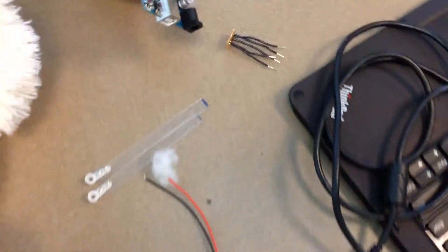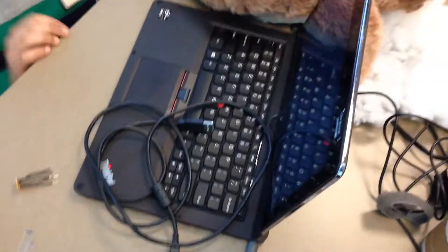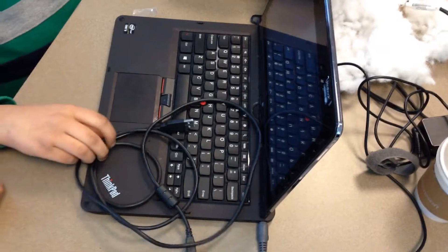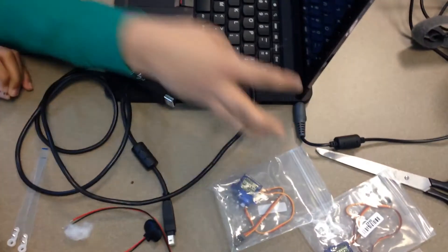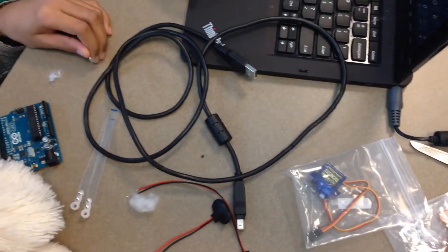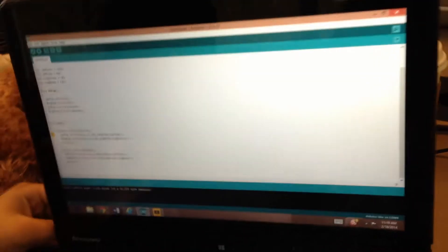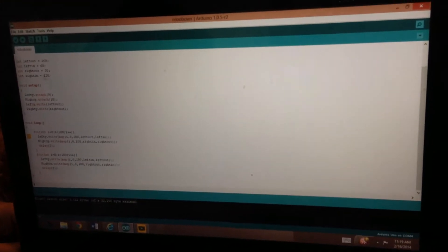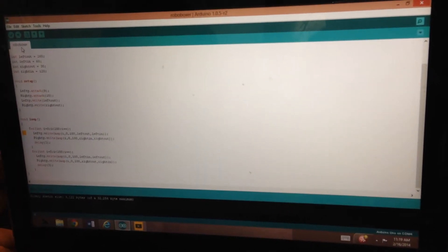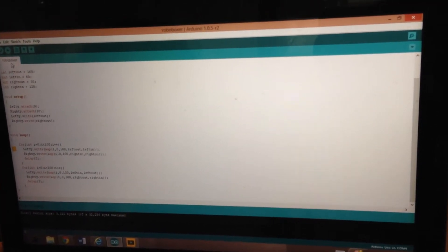You also need the computer. The computer is needed for programming, and the website you might want to be doing it on is called Arduino. So it's like programming, and this is what it's called, like RoboBoxes. It's for your bear's boxing.